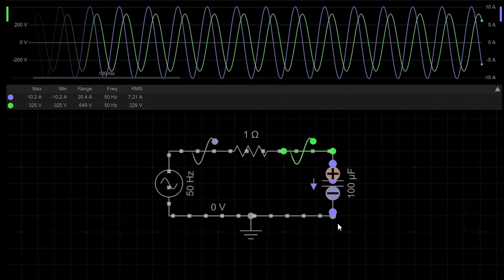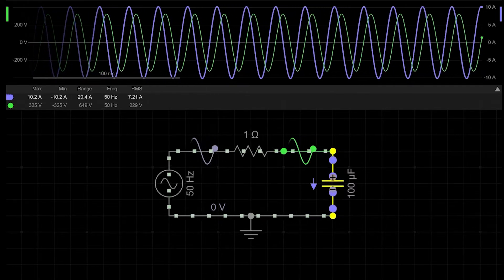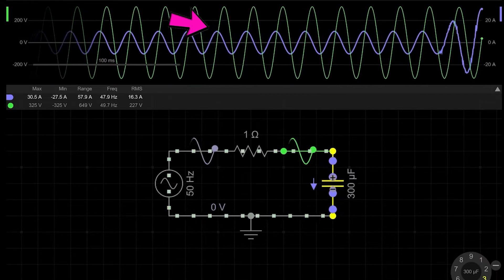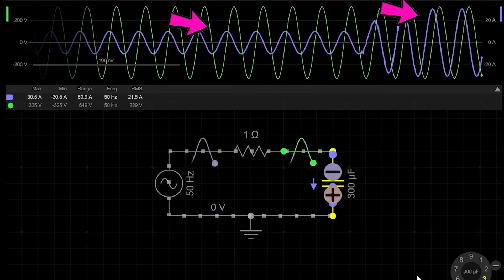Let's now adjust the value of a capacitor and look at the current. Higher capacitance allows higher current to flow and vice versa.